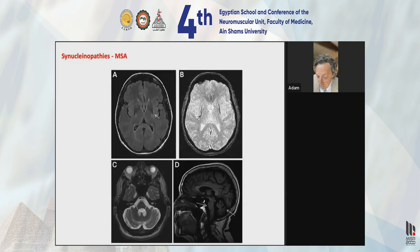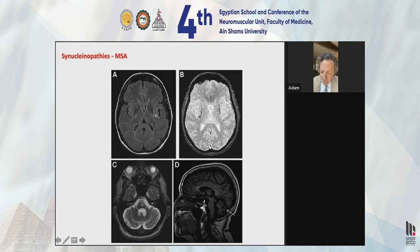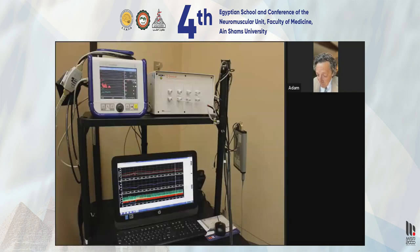One of the most discussed synucleinopathies is multiple system atrophy. The images here show the classic putaminal rim sign, almost never seen in the Parkinsonian variant, and the hot cross bun sign more associated with atrophy of cerebellar fibers in the brainstem in the cerebellar subtype. Here is the lab: you have a beat-to-beat blood pressure monitor, the Q-SWEAT device, the software heart rate monitor, and the tilt table. The CNAP monitor is the heart of the lab.